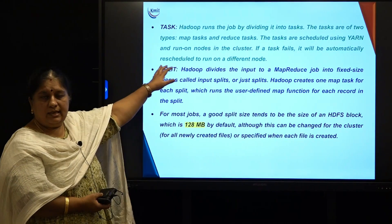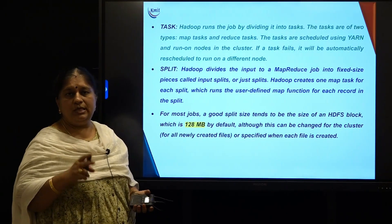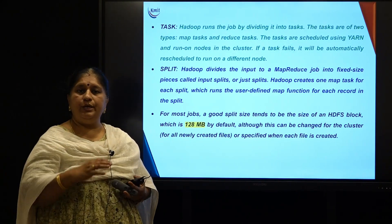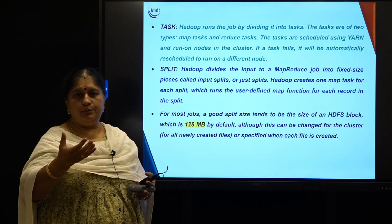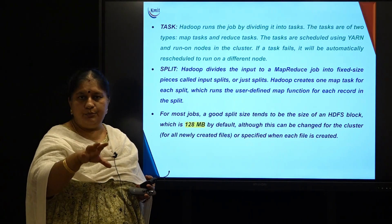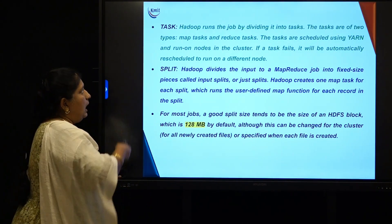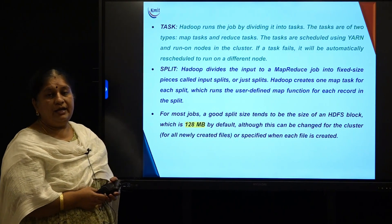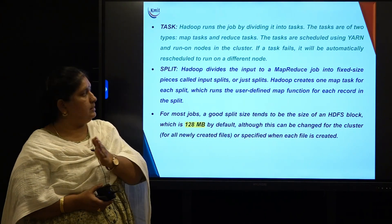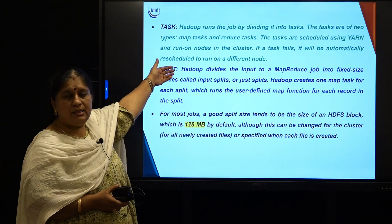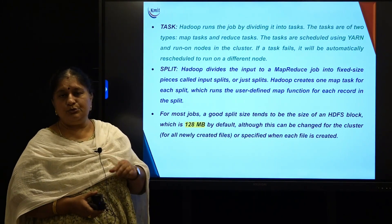Then, what is a task? We talked about job; now we are talking about task. Sometimes we generally use these two terms interchangeably, but when you are talking about Hadoop, you need to distinguish between these two. A job is the entire work which the user wanted to perform — he wrote a MapReduce program, submitted the input data, and gave some configuration information. Hadoop runs the job by dividing it into tasks. The tasks are of two types: MapTasks and ReduceTasks.